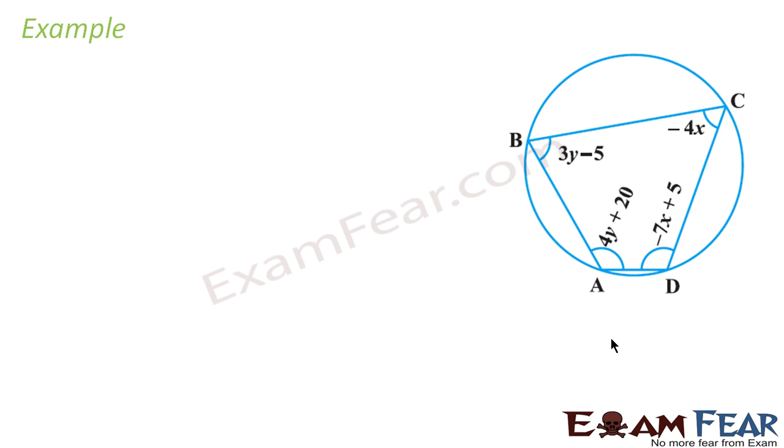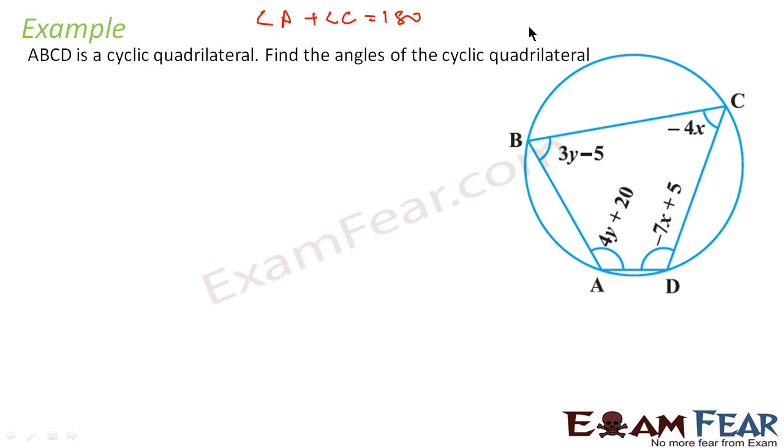Let's take the last example. Here we have to find angle A, angle B, angle C, and angle D. We are told that ABCD is a cyclic quadrilateral. We know that the sum of opposite angles is 180 degrees. That is, angle A plus angle C equals 180, and angle B plus angle D equals 180.